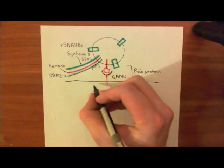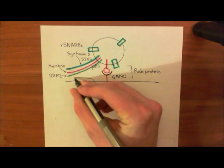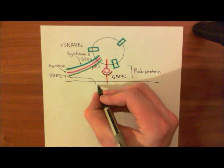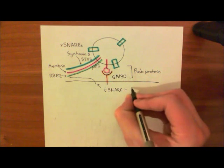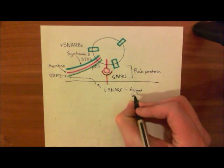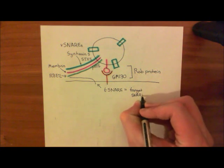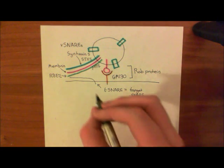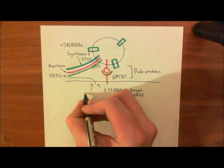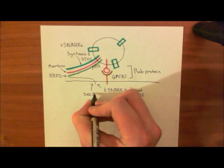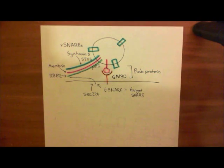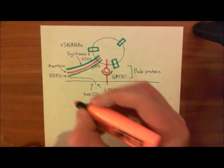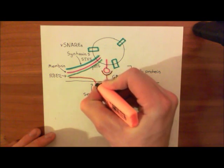Those are the three V-SNAREs. Then there is one target SNARE — a T-SNARE — on the membrane of the target compartment, which is the Golgi. This final SNARE is a protein known as SEC22B. It's one of the proteins that Randy Schekman identified — a mutation in it would result in far too many vesicles in the cell, producing a SEC-mutant yeast. SEC22B is coloured in orange, and like the others, it has an alpha helix.